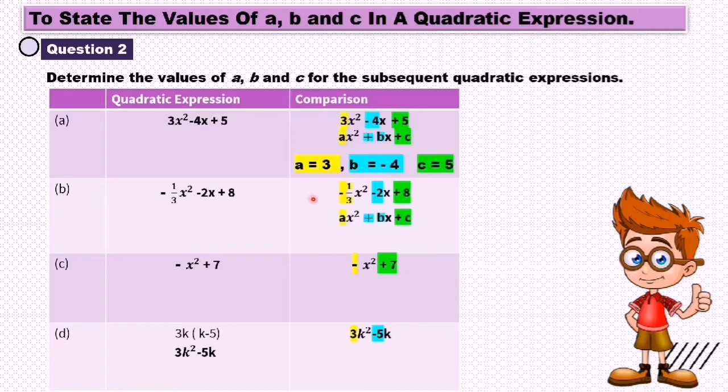Let us look at (b) -1/3 s² - 2s + 8. So a equals -1/3, b equals -2, and c equals 8.